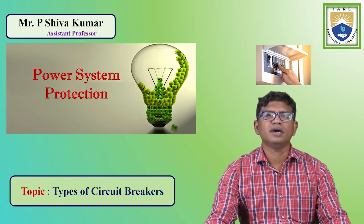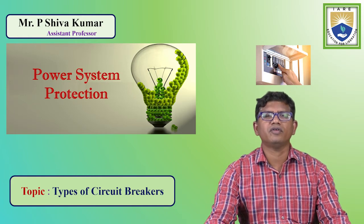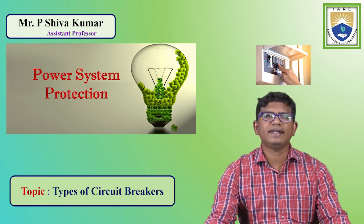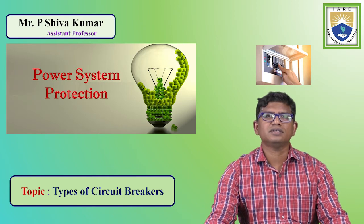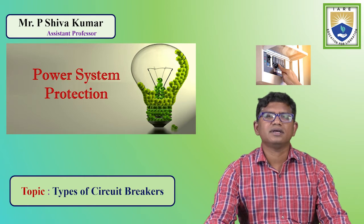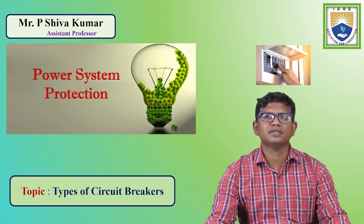However, the fuse has some drawbacks. When the fuse blows off, power interruption takes place and it takes some time to restore the power supply. Sometimes it cannot interrupt heavy currents, causing damage. Power system networks operate with high voltages and currents, and the fuse cannot withstand those conditions. In order to overcome these drawbacks, we introduce the circuit breaker.